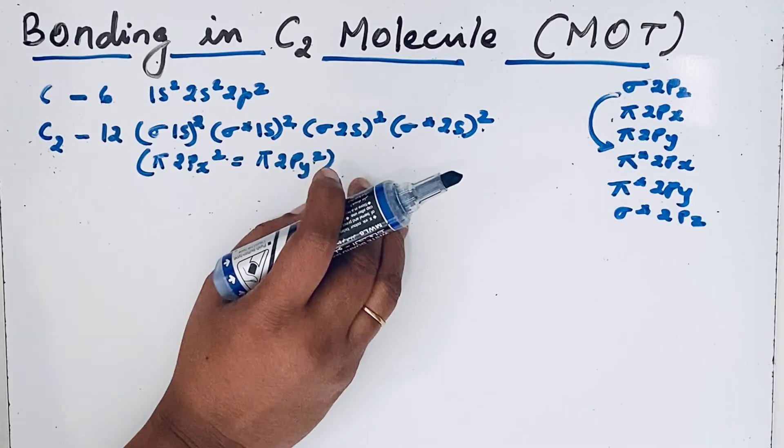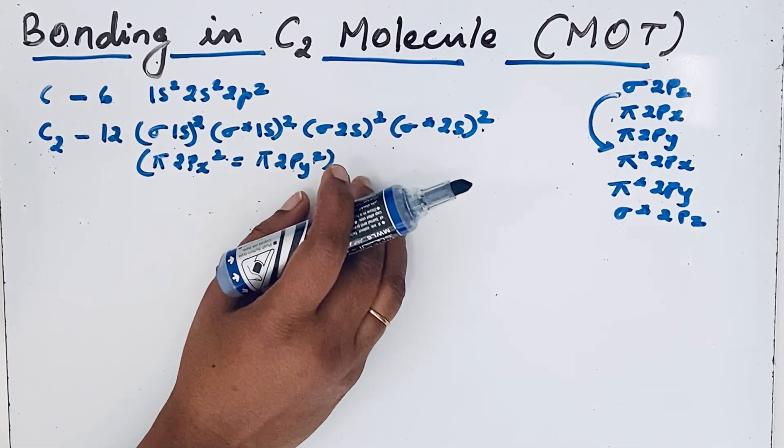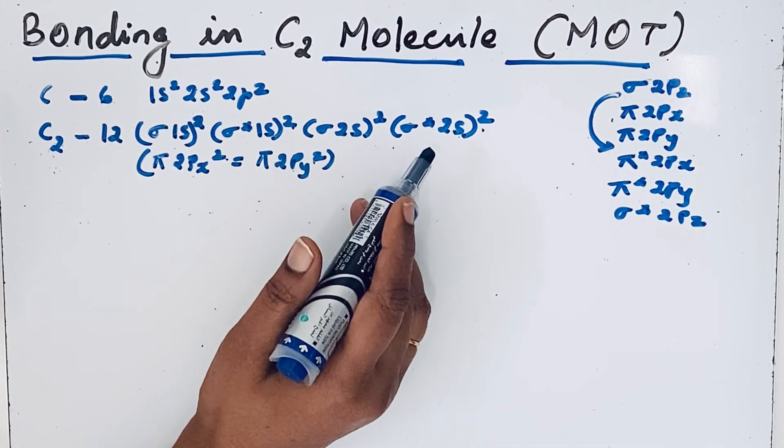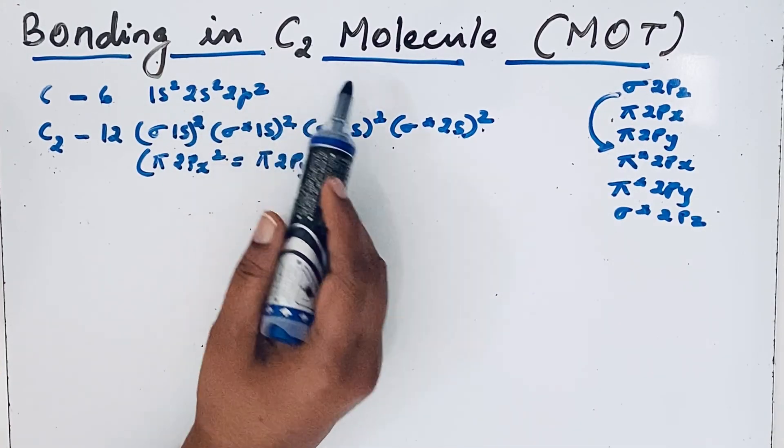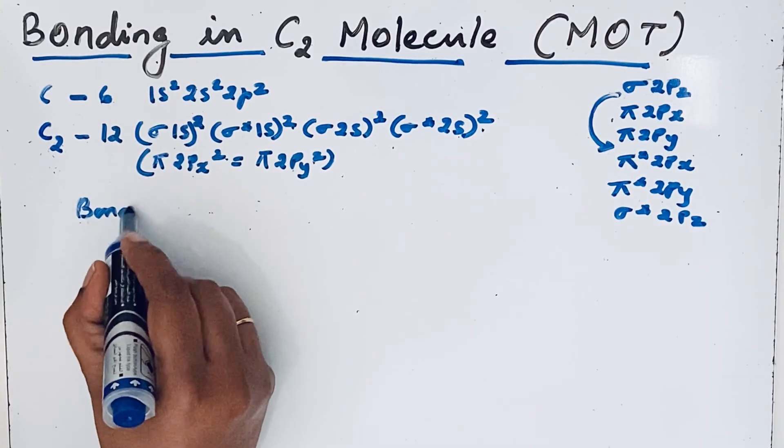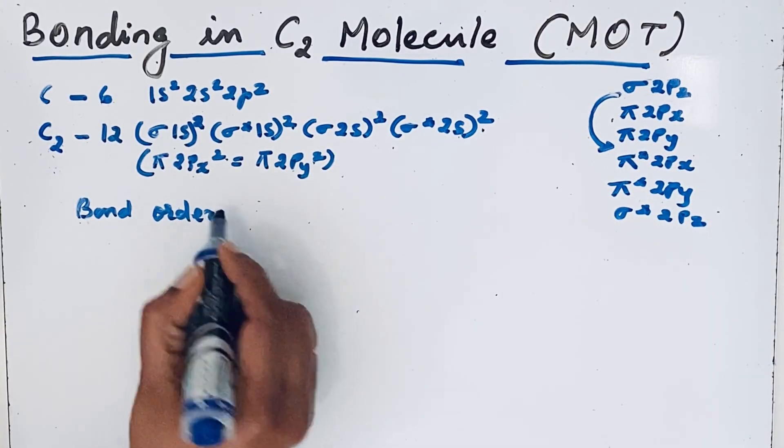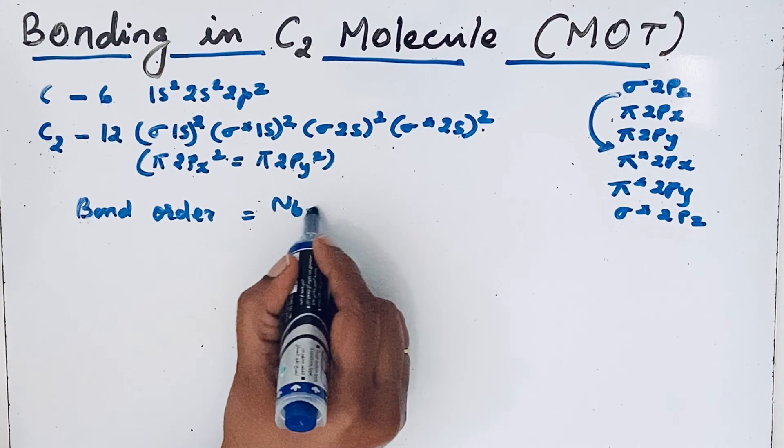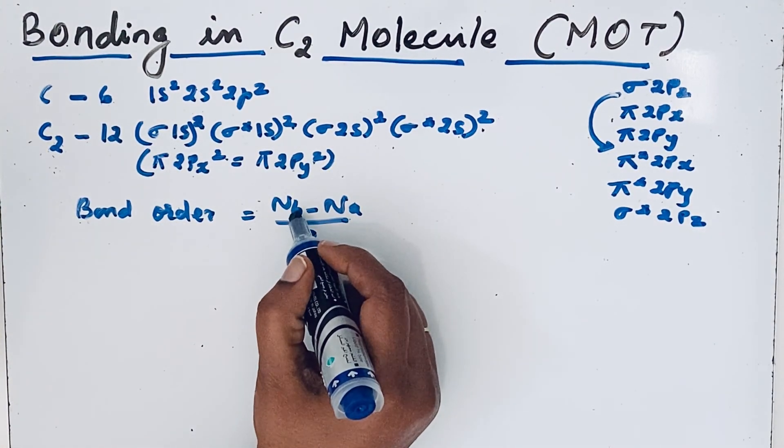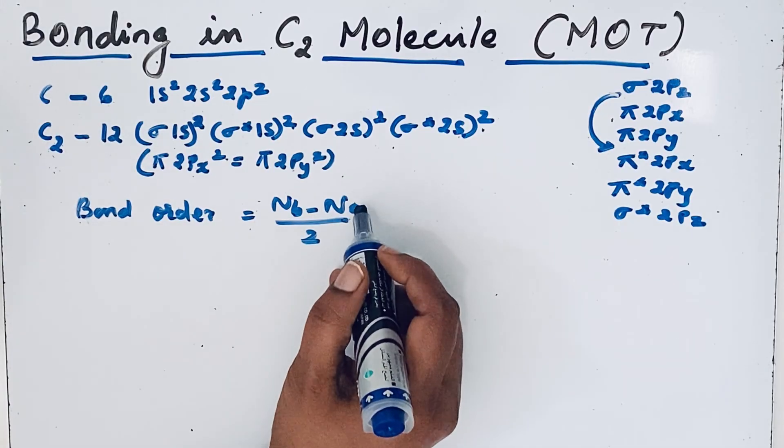Using this, without drawing the molecular orbital diagram for C2 molecule, we can find the bond order and the type of bonding. For bond order, the formula is (Nb - Na)/2. Nb is the number of bonding electrons and Na is the number of antibonding electrons.